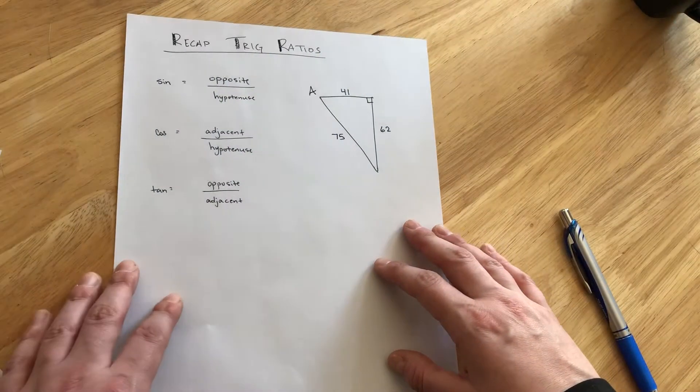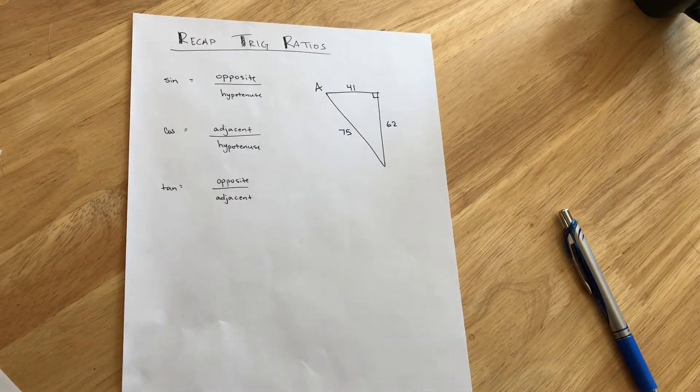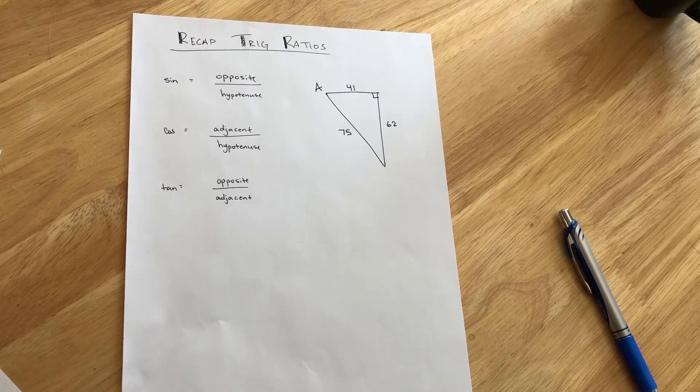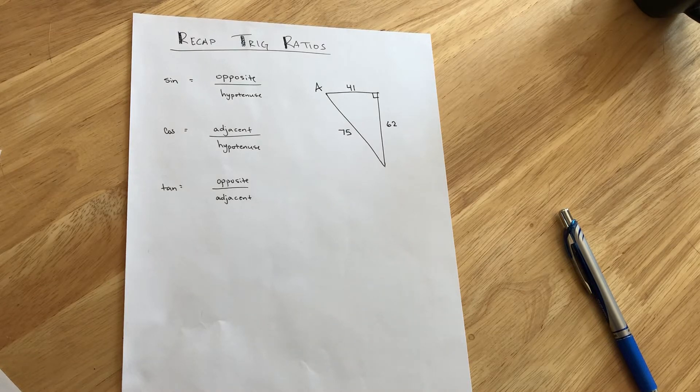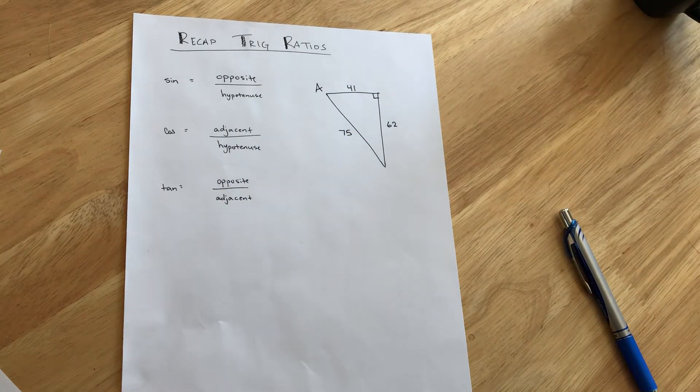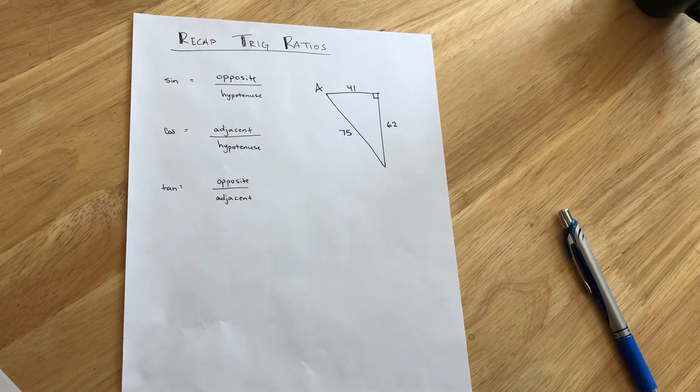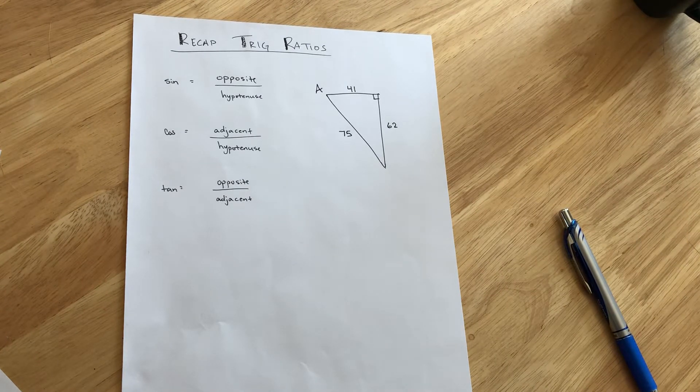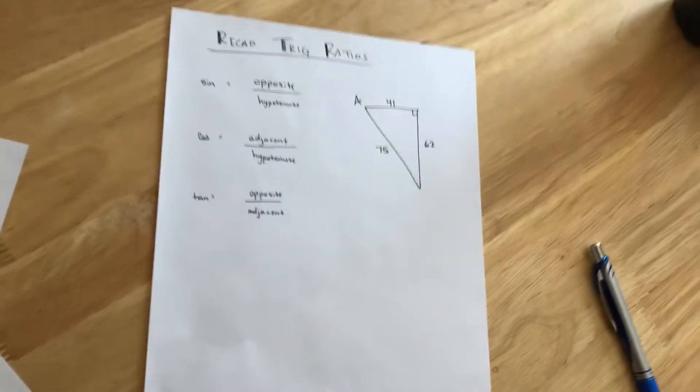So on Delta Math today, there is a timed type of game where it just has you writing out the ratios for sine, cosine, and tangent. Just to review what these ratios are: the sine ratio always puts the opposite over the hypotenuse, the cosine of an angle always puts the adjacent over the hypotenuse, and tangent always puts the opposite over the adjacent.